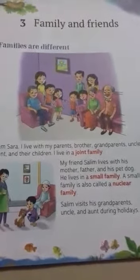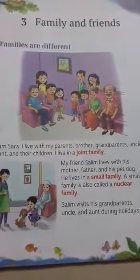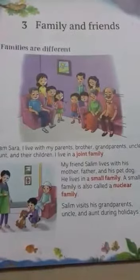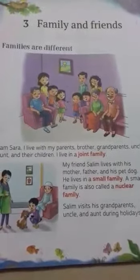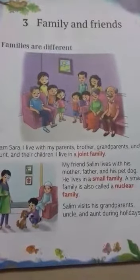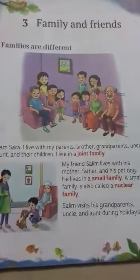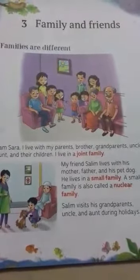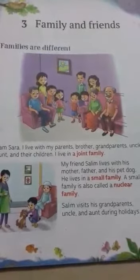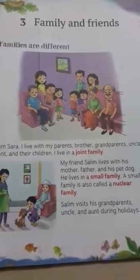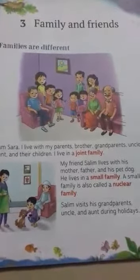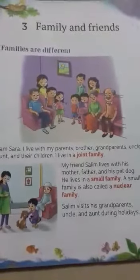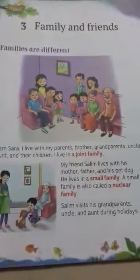What is a joint family? A family having grandparents, parents, children, uncles, aunts, and cousins all living together in the same house is called a joint family.